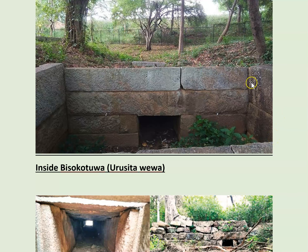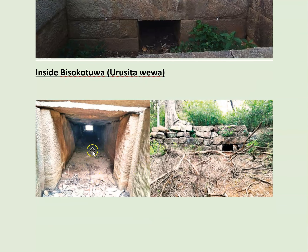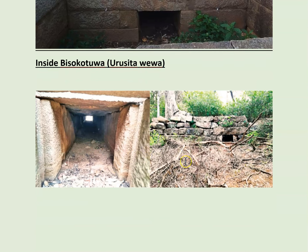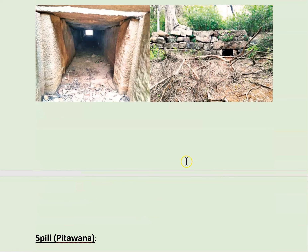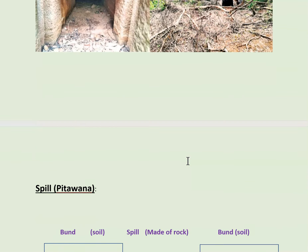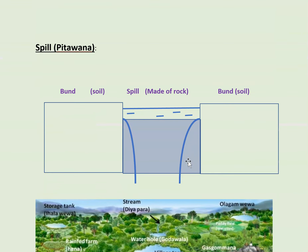This is the Urusitava bisokotua. The whole bisokotua is not visible today — only part of it remains — along with the tunnels that take water in and out. They also needed a spillway, because if water spilled over the soil bund it would fail, so they built a rock structure known as the pitavana, or spillway.